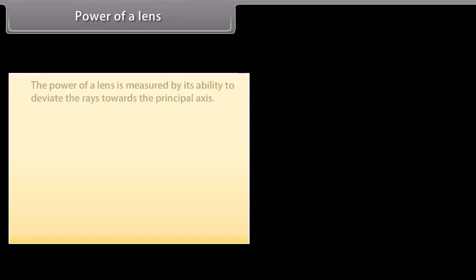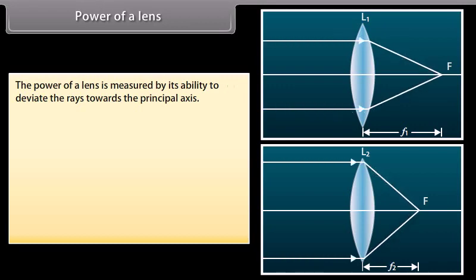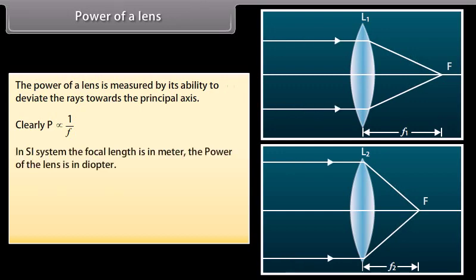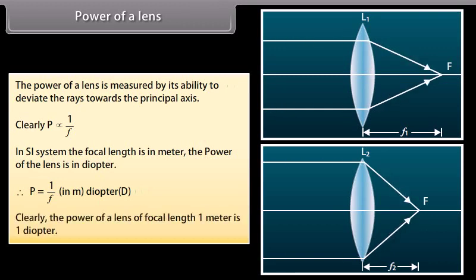Power of a lens. The power of a lens is measured by its ability to deviate rays towards the principal axis. Lens L2 has focal length less than L1, so L2 bends rays more than L1, meaning the power of L2 is greater than that of L1. Clearly, P is directly proportional to 1/f. In SI units, the focal length is in meters and the power is in diopters. Therefore P = 1/f (in meters). The power of a lens of focal length 1 meter is 1 diopter.